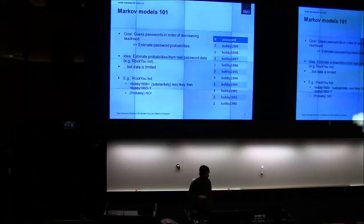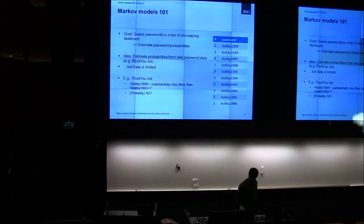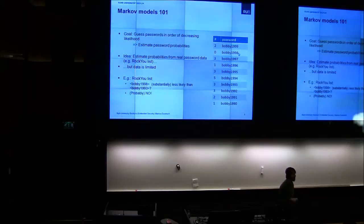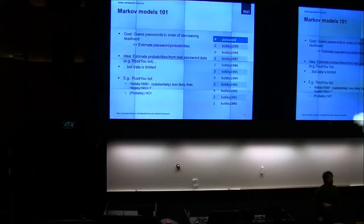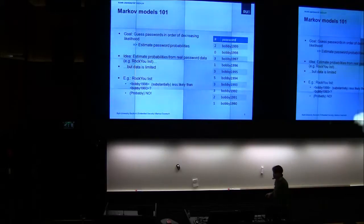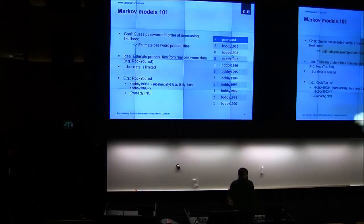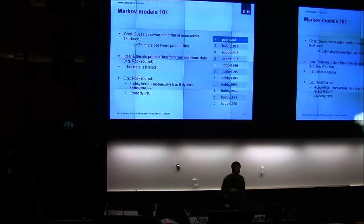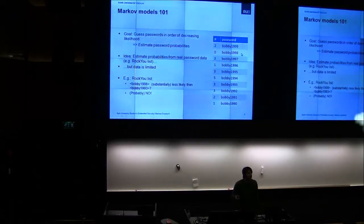One nice example from the RockYou list: we have several occurrences for 'Bobby' followed by a year number, but zero occurrences for 'Bobby1998'. The question is, is there a fundamental reason why 'Bobby1998' never appears? In all likelihood there is no specific reason — all these passwords should be of about the same likelihood. However, just by chance, Bobby1998 never appeared in our data. If we base our probability estimates on that list, we will never make that guess, which is a bad thing.